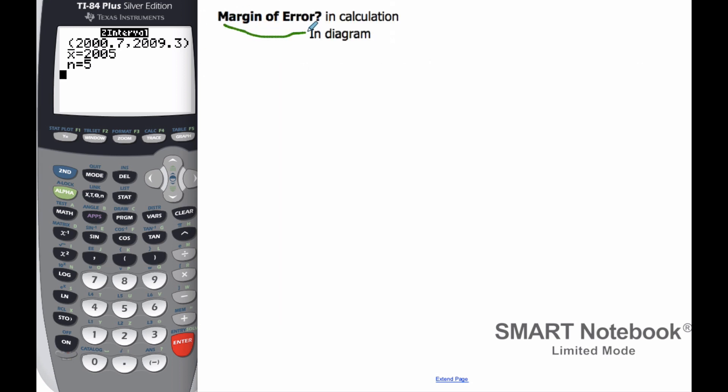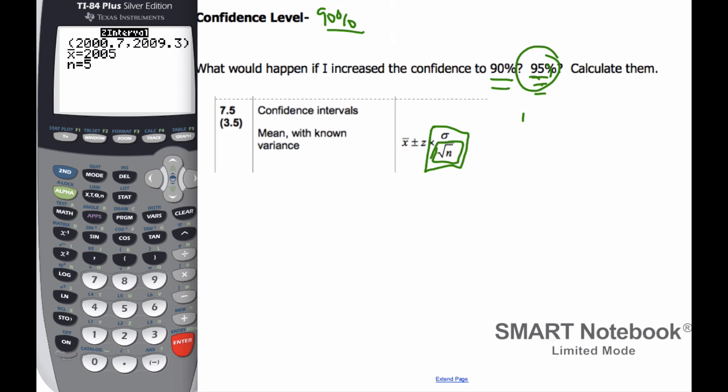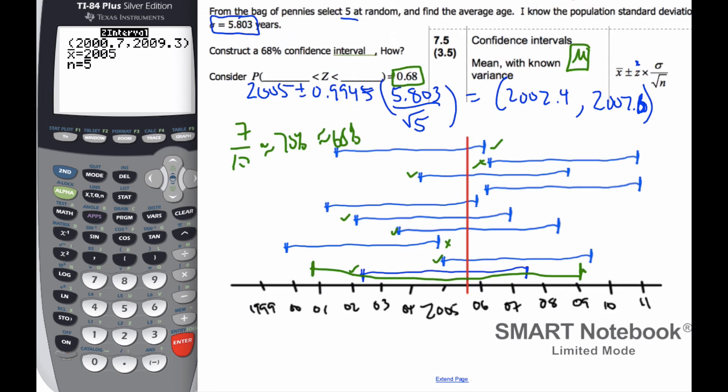Now, we have this idea called a margin of error. Remember, if I look at my calculation here, when I look at, let's say, this particular confidence interval here was my X bar, or maybe I'll use, let me clean this up a little bit here. So if I get rid of the green, let's get rid of the green one.